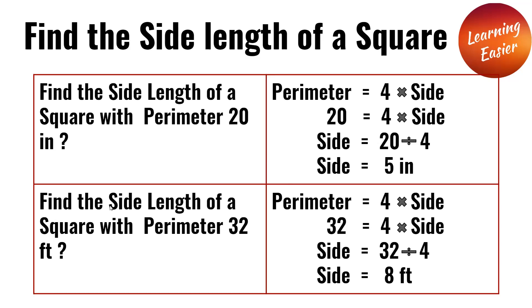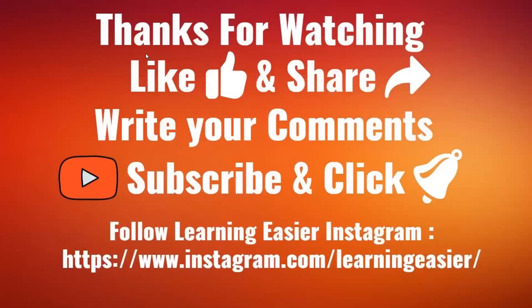Find the side length of a square with perimeter 32 feet. 32 equals 4 multiplied by the side. Side equals 32 divided by 4. Side equals 8 feet.